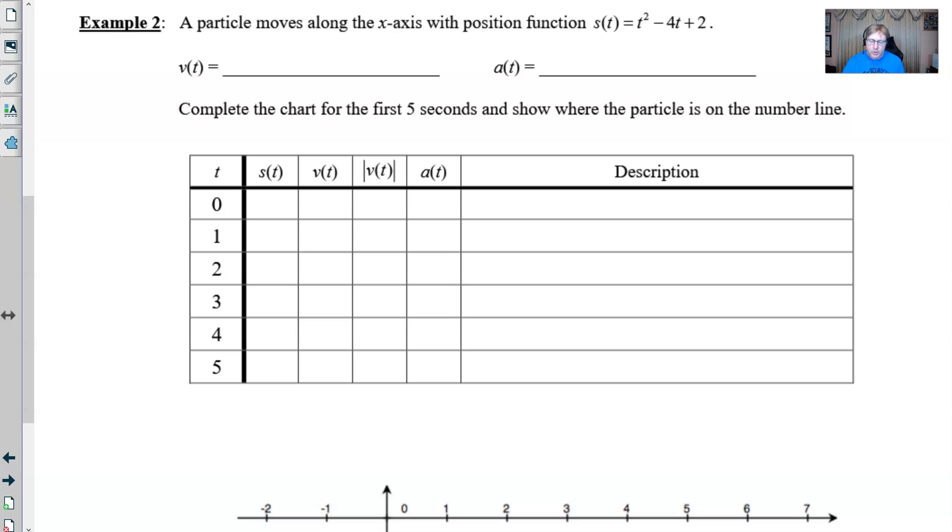So we're given the fact that a particle moves along an x-axis with a position function of s(t) equal t squared minus 4t plus 2. You're asked to essentially fill out what this table is going to convey over the first five seconds of motion for this particle. But because we have velocity and acceleration information in the table, we're going to have to take those two derivatives. So those aren't going to be very tough derivatives.